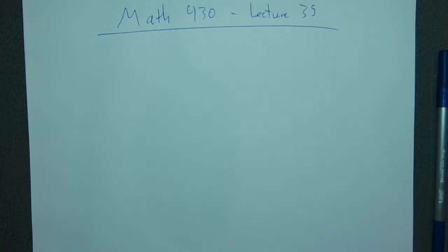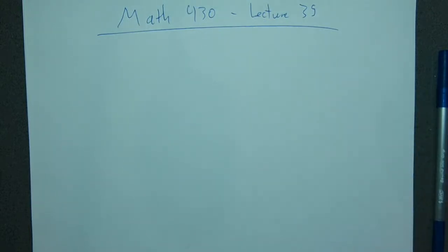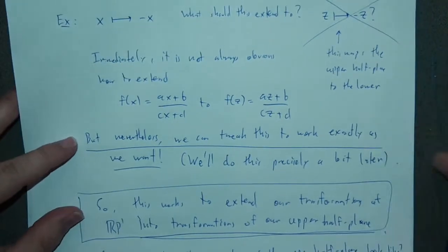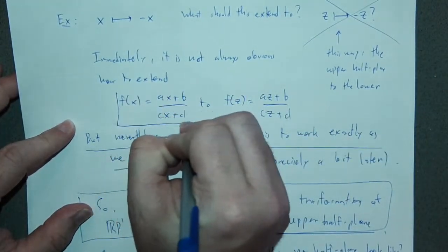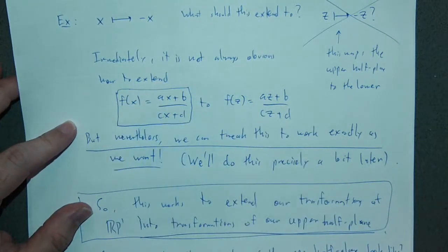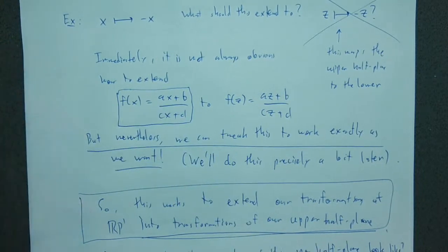Welcome back. The stopping point last time was an overview of what happened when we took our group of transformations — the fractional linear transformations — and extended them to the plane rather than just the line. So from last time, we have fractional linear transformations. These were the transformations that gave RP1 the geometry we're familiar with, and our intuition was to extend RP1, basically to add another dimension to RP1.